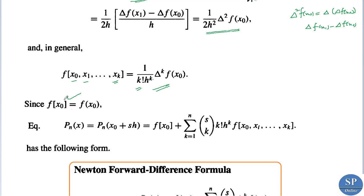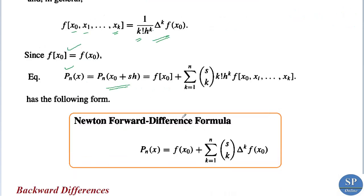Using this general relation, we can express Newton's forward difference formula. Since f(x0) = f(x0), the interpolating polynomial is p_n(x) = f(x0) plus summation k from 1 to n of s choose k times delta^k f(x0), where s = (x - x0)/h. Here k! times h^k times f[x0, x1, ..., x_k] is replaced by delta^k f(x0). This is Newton's forward difference formula, and for solving problems we can use this form directly.